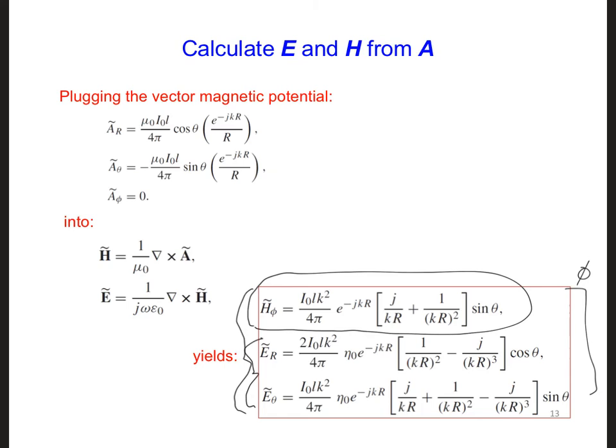So in these expressions, every time you see an r and a theta, that's describing where our observation point is relative to the dipole at the origin. We have I naught, which is the magnitude of the current in the dipole. L is the length of the dipole. K is 2 pi over lambda. And eta naught is just for free space.